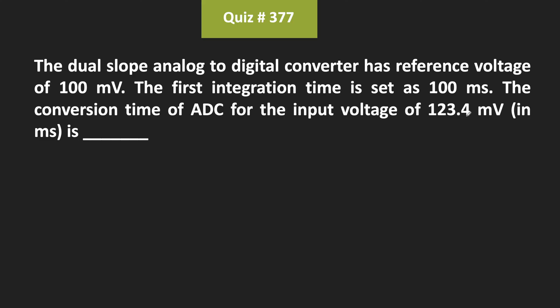Here, we have already been given the reference voltage as well as the input voltage for this dual slope ADC. Moreover, we have also been given the first integration time of this ADC. So with the help of it, let us find this conversion time.